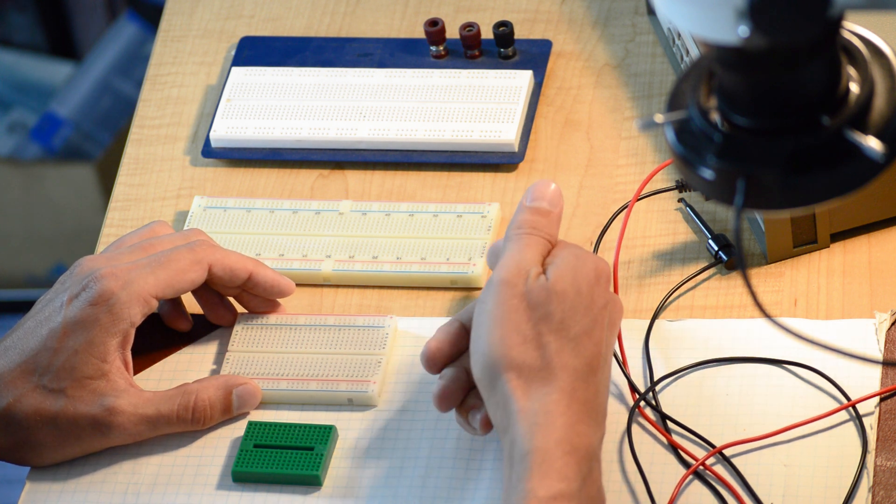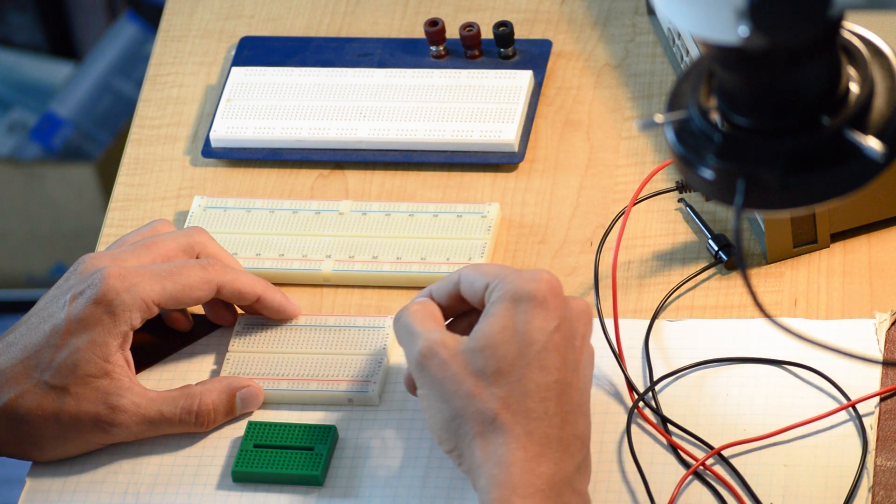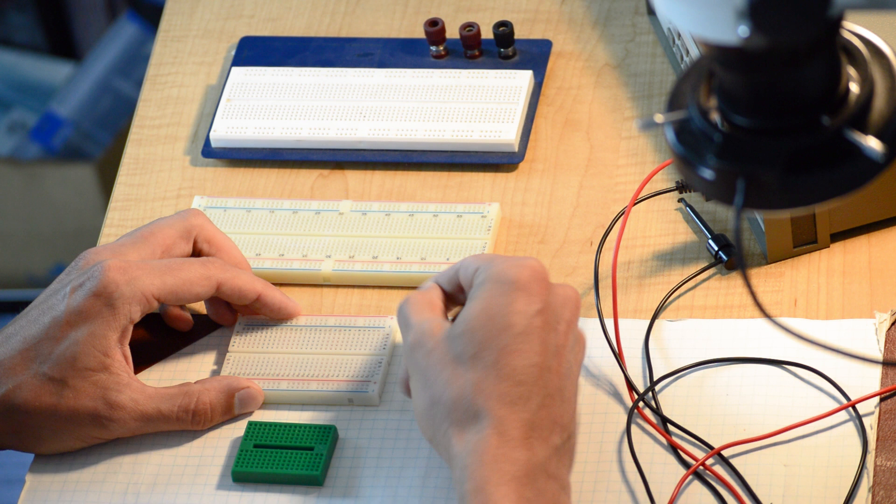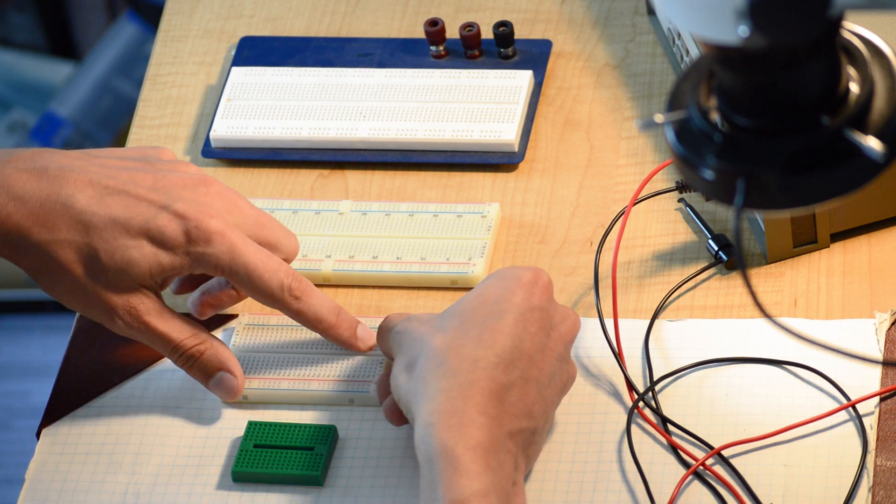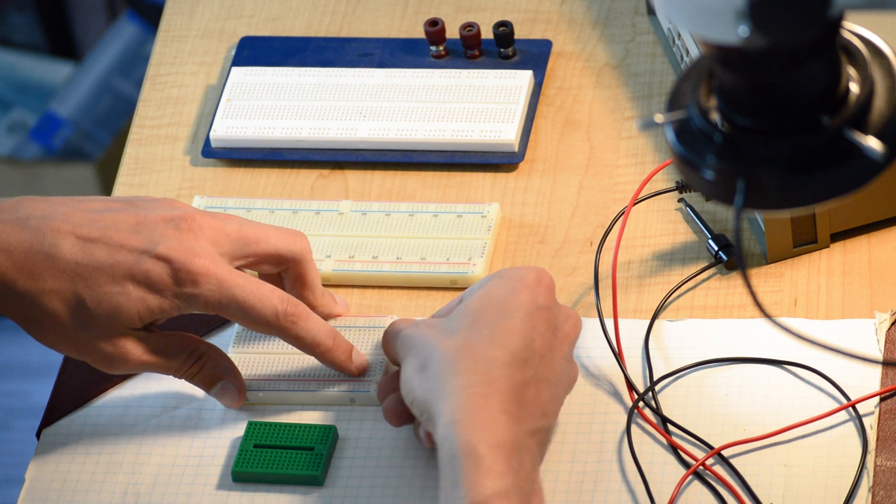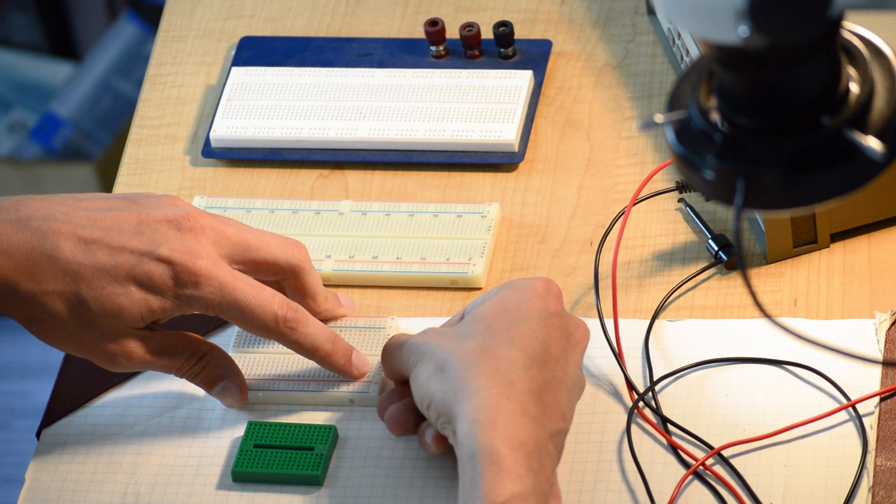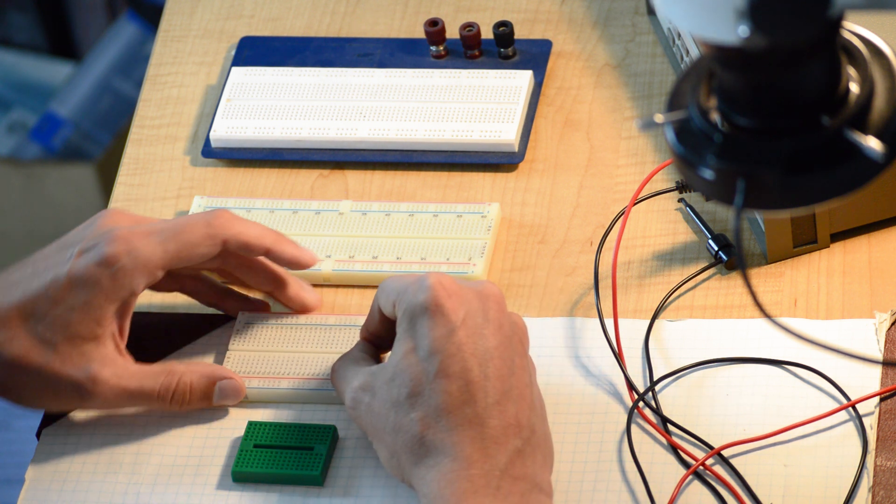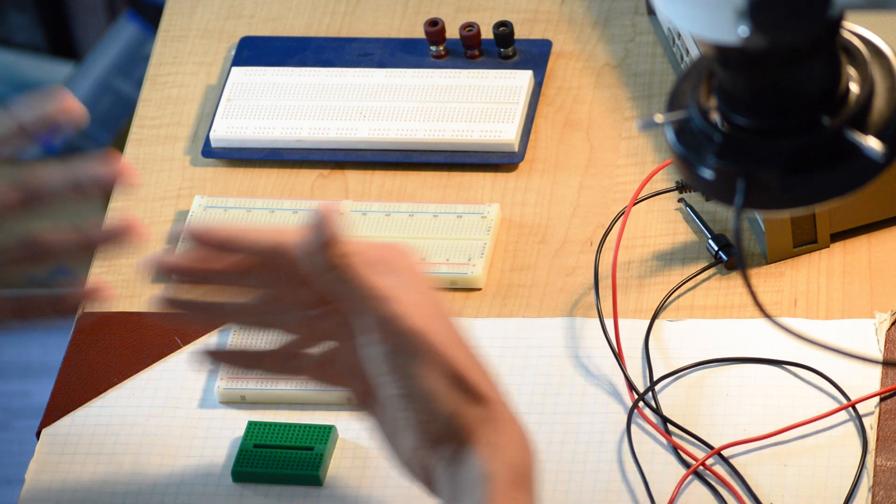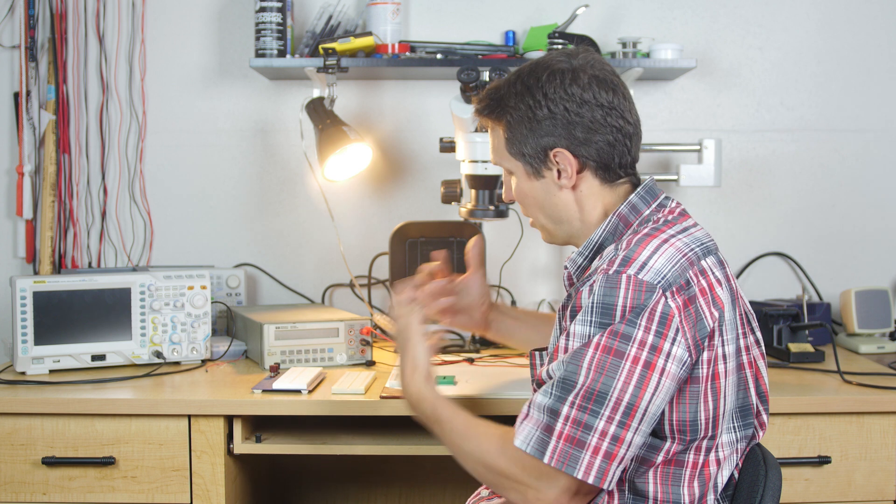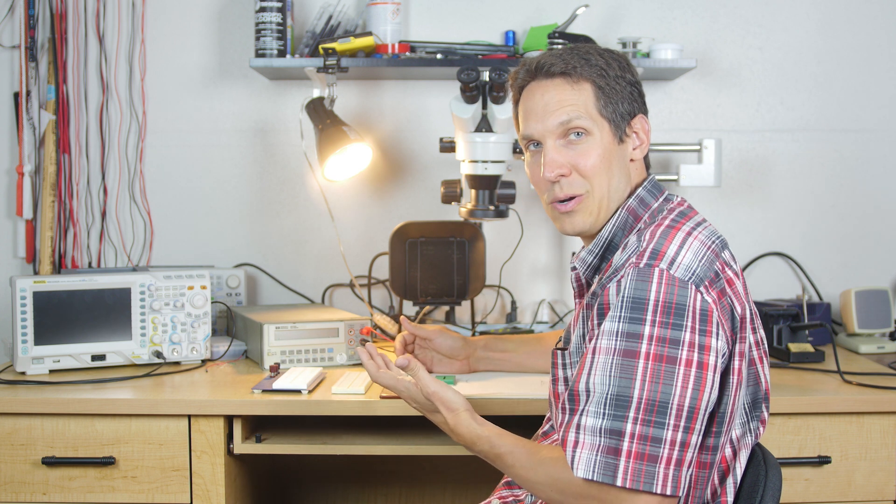On this particular one, and you can see it with all these other ones as well, A, B, C, D, and E in row one are all connected together. And then F, G, H, I, and J are all connected in row one. But anything in row one down to row 30 on this is not connected in any way. You can use this to basically connect the things that you want to and not connect the things that you don't want to.